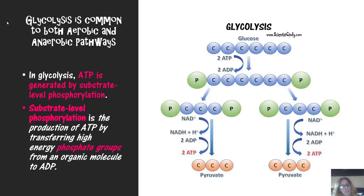In contrast, in the electron transport chain, ATP will be created through oxidative phosphorylation. In glycolysis, ATP is generated by substrate level phosphorylation — the production of ATP by transferring high energy phosphate groups from an organic molecule to ADP.